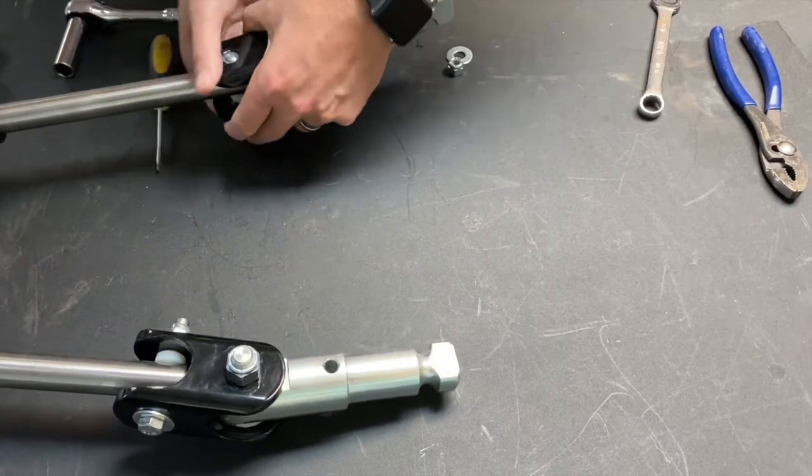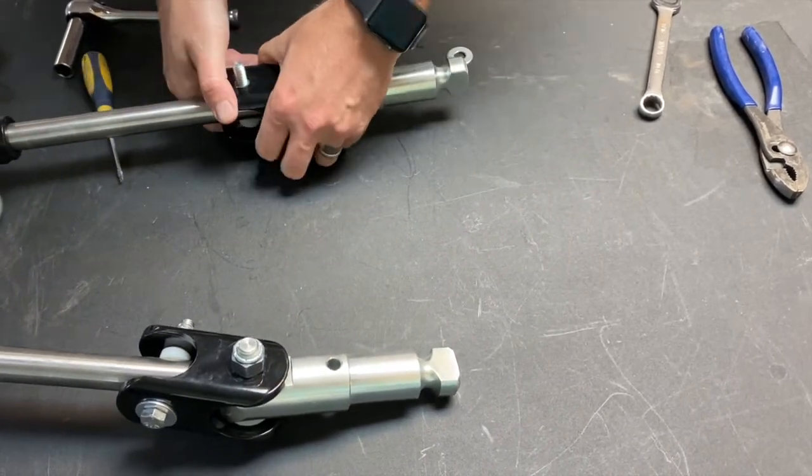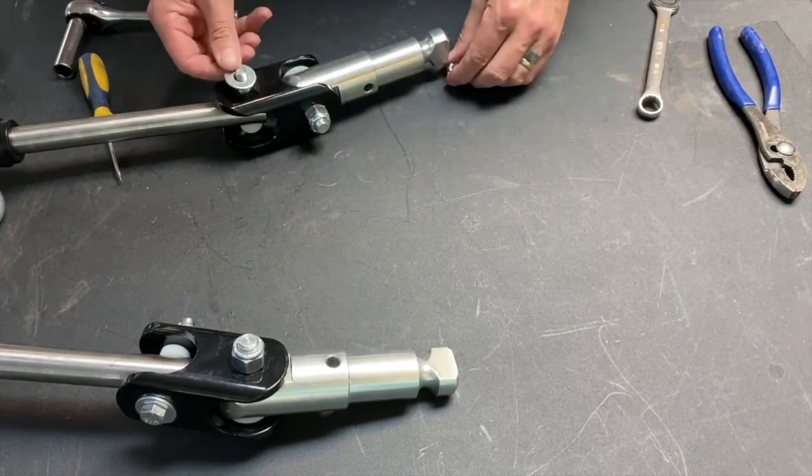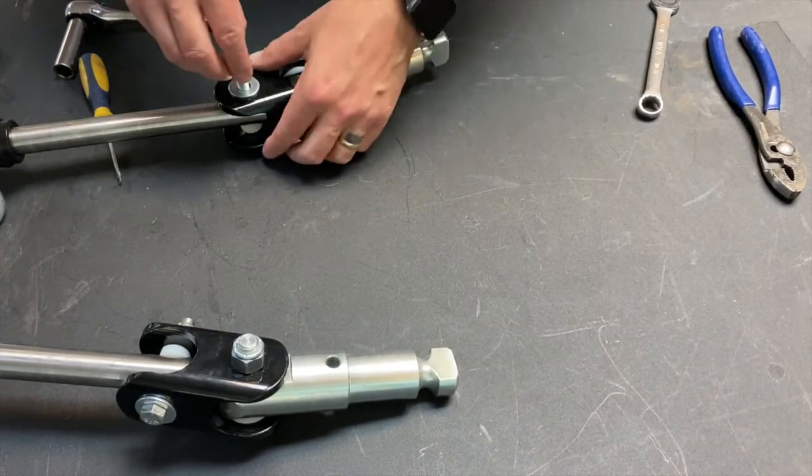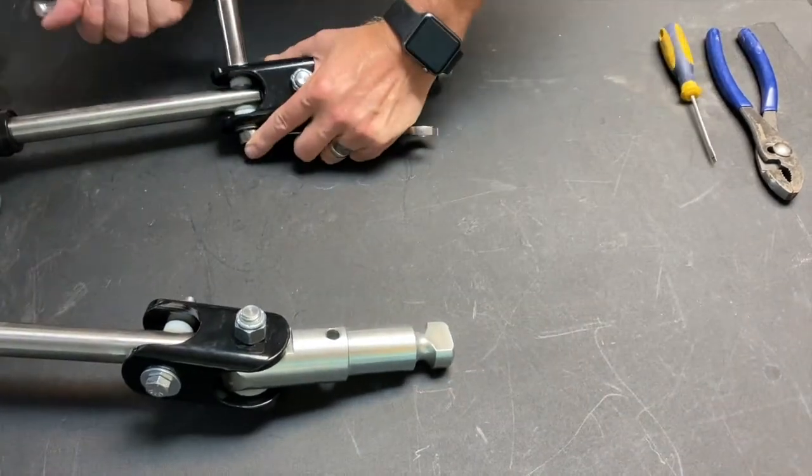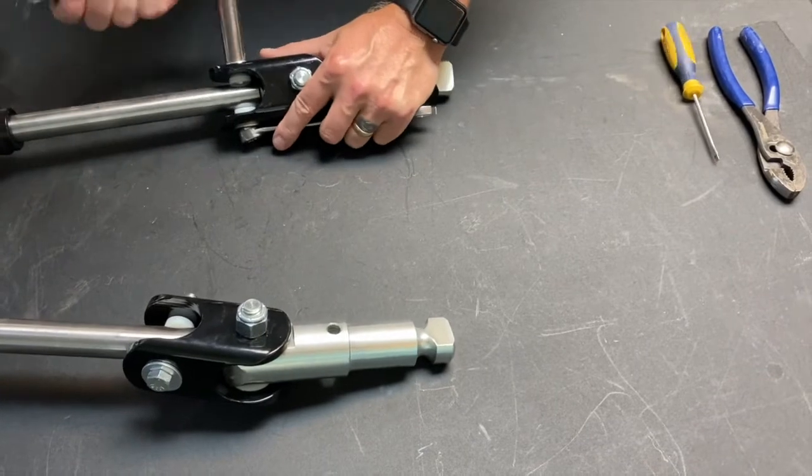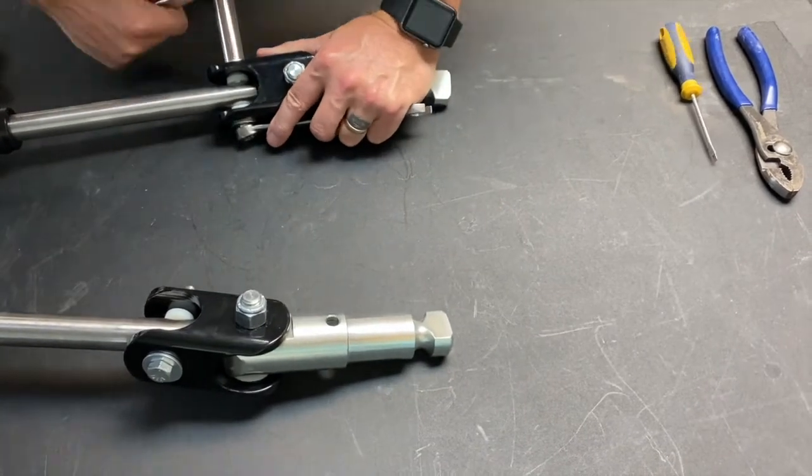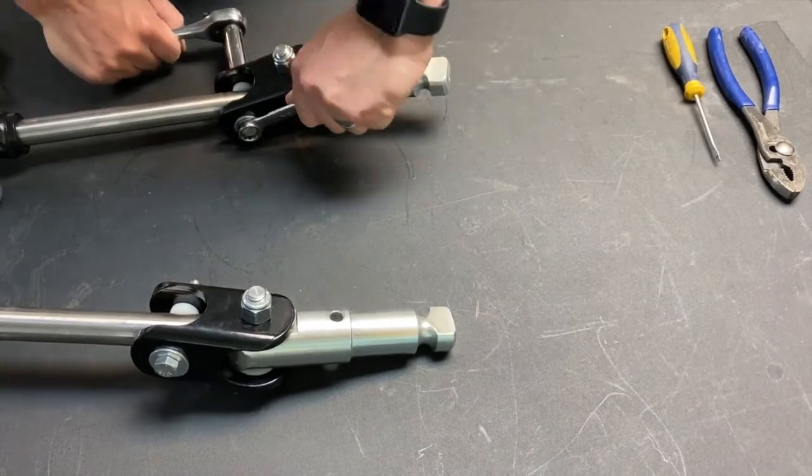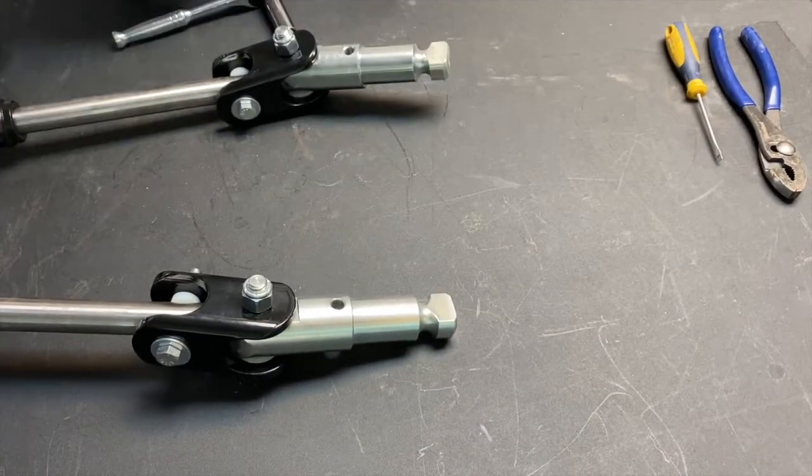Place the other steel washer on the other side and screw on the lock nut. All that's left to do is tighten down our bolt and nut. We want to tighten it down just enough so you can still rotate the clevis on the bar end.